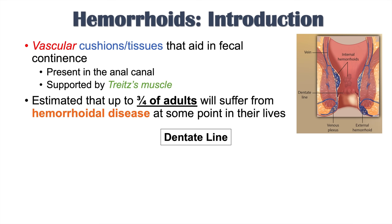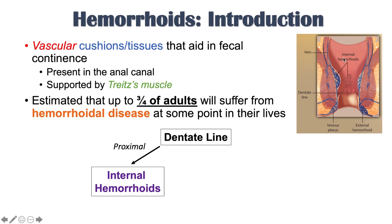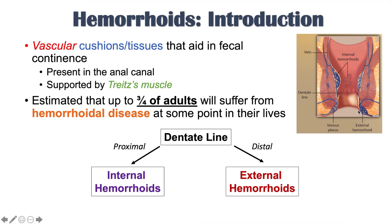How do we distinguish between internal and external hemorrhoids? There is something called the dentate line, and internal and external hemorrhoids are defined by their location relative to this line. If the hemorrhoids are proximal to the dentate line, they are known as internal hemorrhoids. If they are distal to the dentate line, they are known as external hemorrhoids.